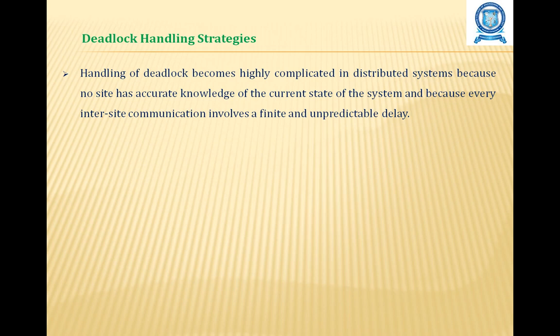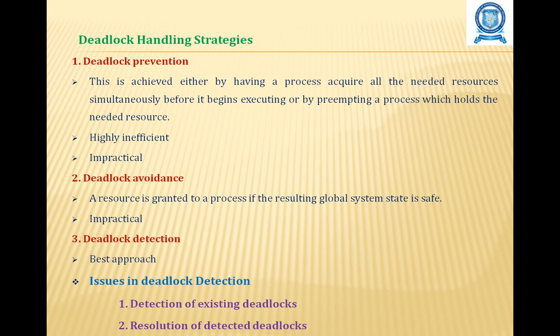Deadlock handling becomes highly complicated in distributed systems because no site has accurate knowledge of the current state of the system and because every inter-site communication involves a finite and unpredictable delay. The deadlock handling strategies are: deadlock prevention, deadlock avoidance, and deadlock detection. Deadlock prevention is achieved either by having a process acquire all needed resources simultaneously before it begins execution, or by preempting a process that holds the needed resource. This approach is highly inefficient and impractical in distributed systems.